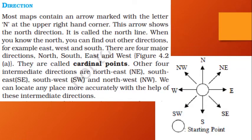The compass is very important on a map. With a compass, we can identify whether a place is situated in the northeast, southwest, or any other direction. We can easily identify the location of any place with the help of directions.